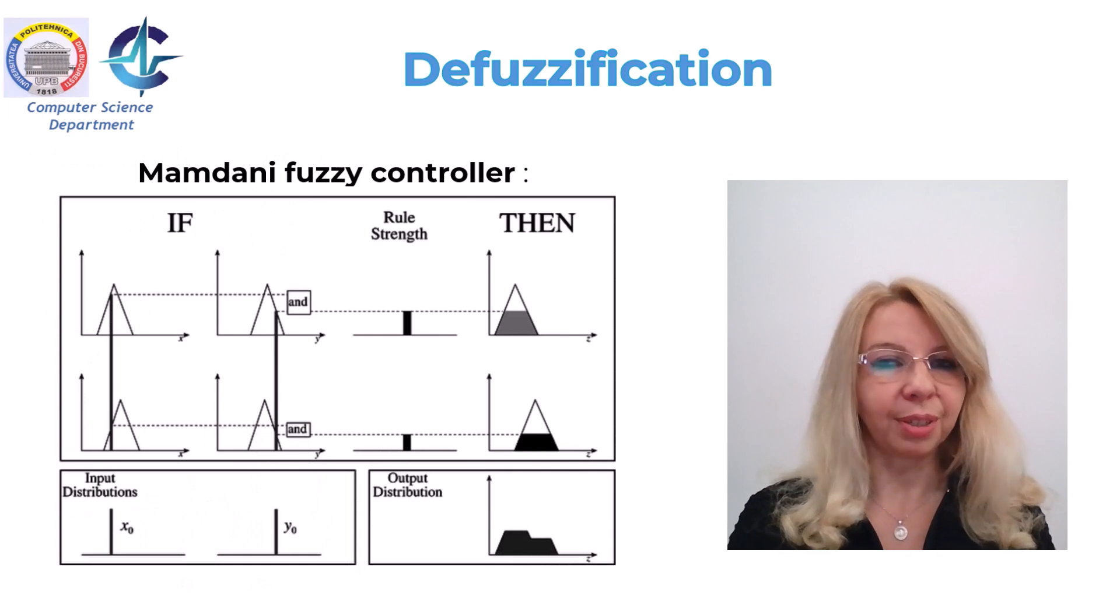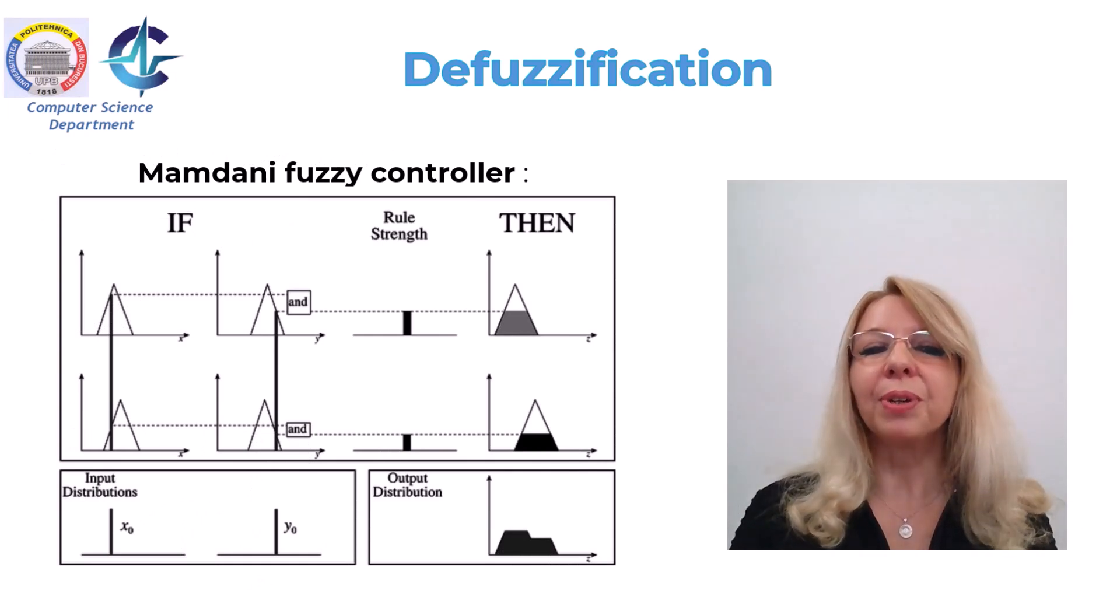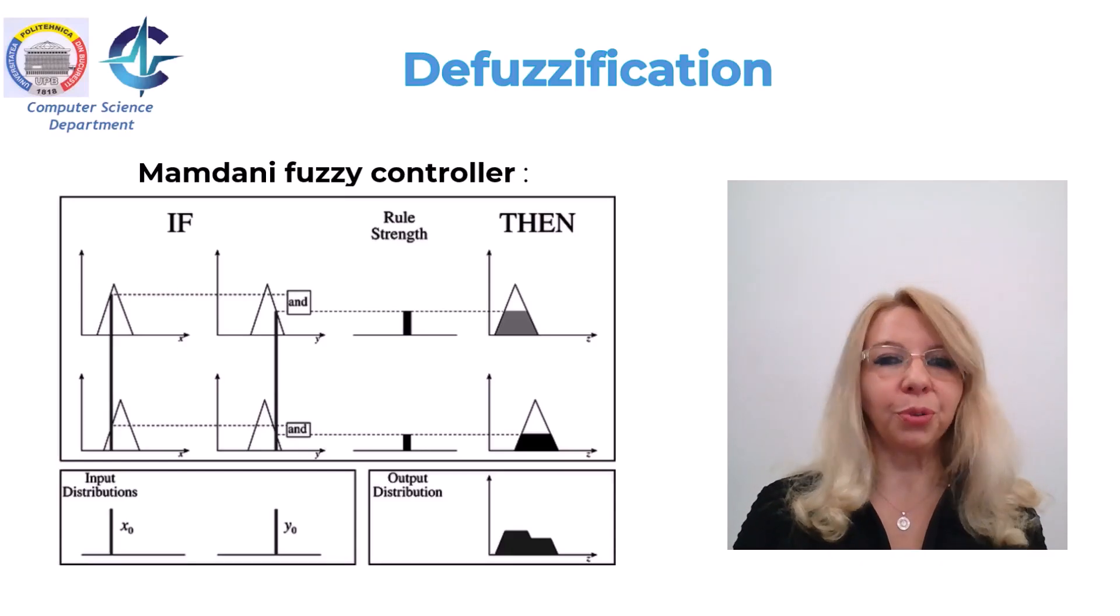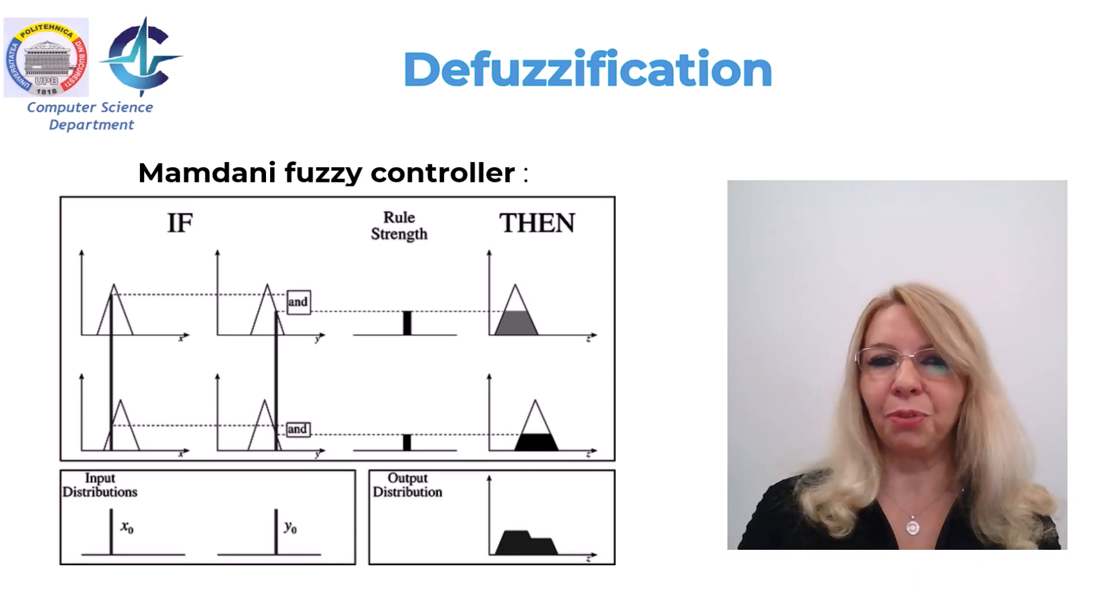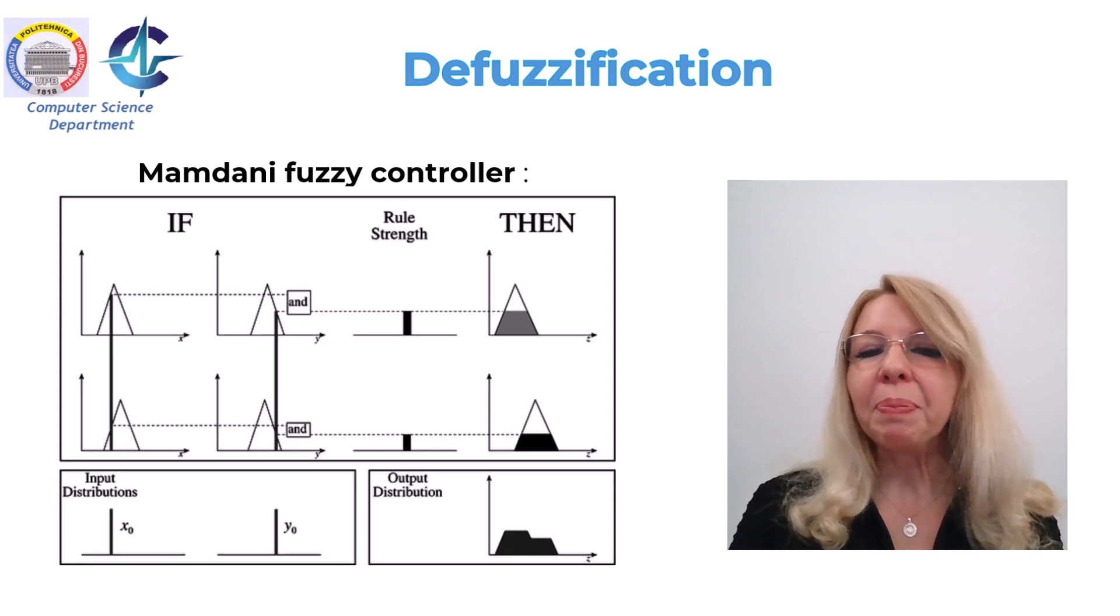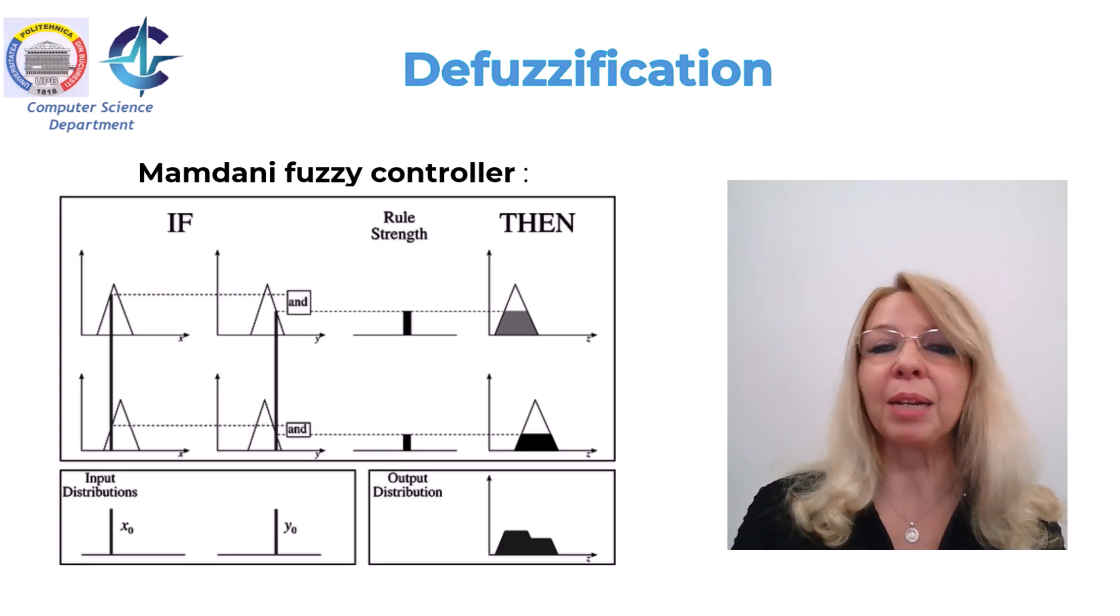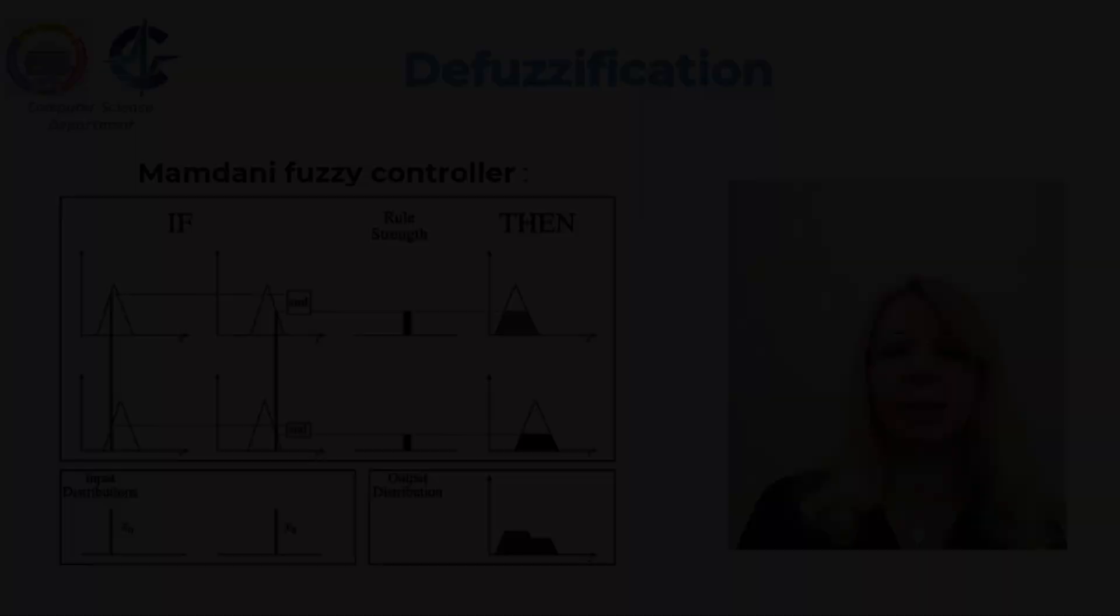Let's talk now about the Mamdani fuzzy controller. This was the first attempt to control a steam engine and boiler combination by a set of linguistic control rules. It used for the rules the composition rule max mean and the defuzzification method was the center of gravity. The typical Mamdani fuzzy controller can be seen in the figure.